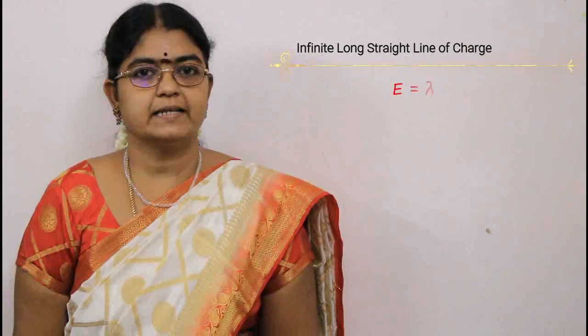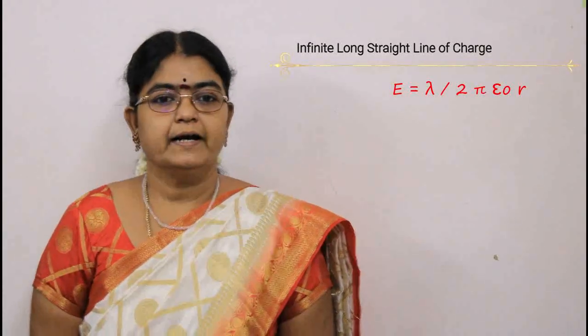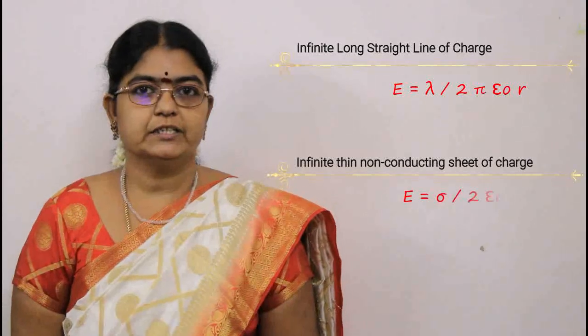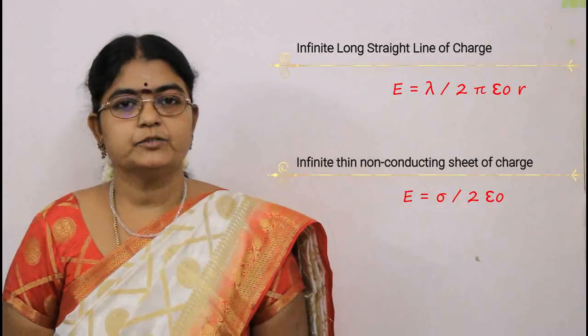The points to be noted here are: the electric field E is the same for all points on each side of the sheet. An infinite sheet of charge cannot exist physically, but the equation E equals sigma by 2 epsilon-nought gives approximately correct results for real charge sheets if we consider only points that are far away from the edges and whose distance from the sheet is small compared to the dimension of the sheet. Thus, we have applied Gauss's Law to an infinite long straight line of charge, where the electric field E equals lambda by 2 pi epsilon-nought R, and to an infinite thin non-conducting sheet of charge, where E equals sigma by 2 epsilon-nought.